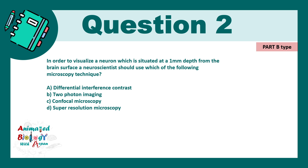Question 2: In order to visualize a neuron situated at a one-millimeter depth from the brain surface, a neuroscientist should use which of the following microscopy techniques? A) Differential interference contrast, B) Two-photon imaging, C) Confocal microscopy, D) Super-resolution microscopy. The correct answer is two-photon microscopy. If you want to learn more about this, you can find it in the i-button.